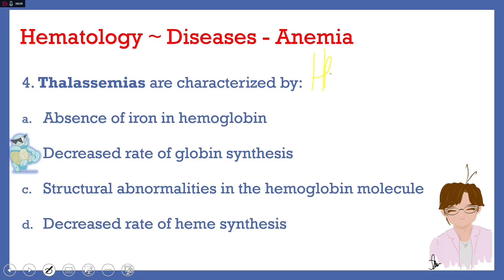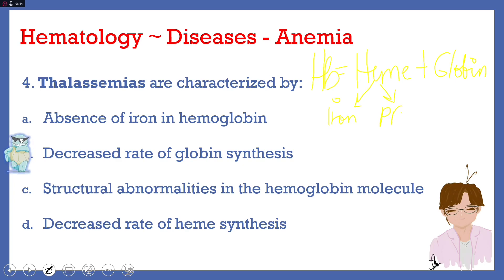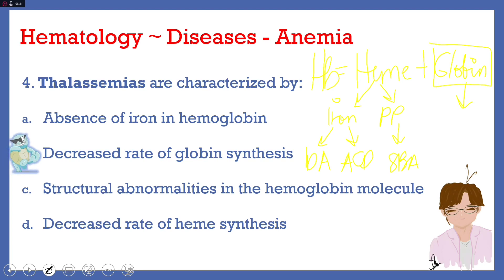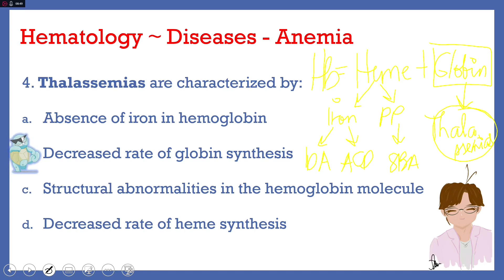As noted, let's have a quick review. The hemoglobin molecule is composed of heme combined with globin. Heme is produced by combining iron with protoporphyrin. When the problem is in the iron, it gives rise to iron deficiency anemia or anemia of chronic disease. If the problem is in the protoporphyrin, we have sideroblastic anemia. If the problem is in the globin portion, we have the thalassemias. If you lack alpha chains, you have alpha thalassemia; if the beta chain is affected, you have beta thalassemia.